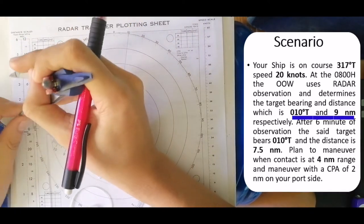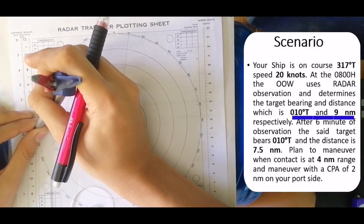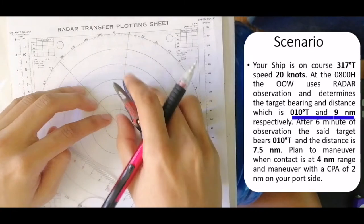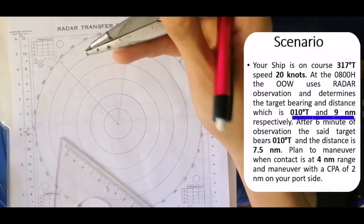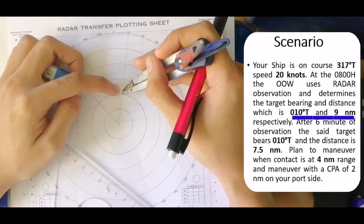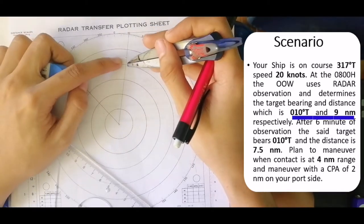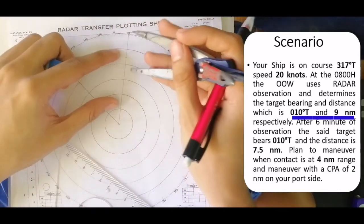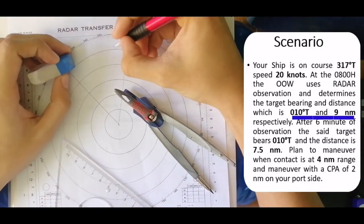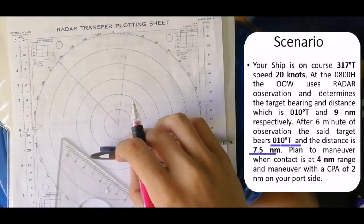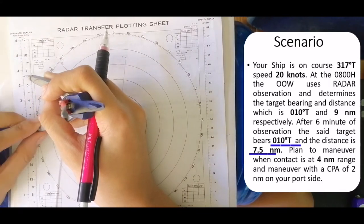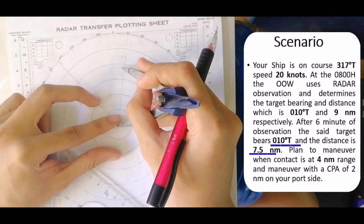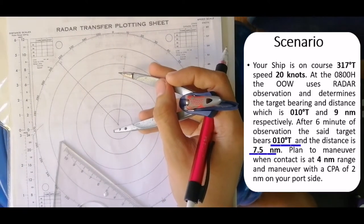For 12 nautical miles, measure 9 nautical miles and transfer it — that gives you your first observation. You can also use the range rings, since each ring is 2 miles: two, four, six, eight — you can add one more to get nine. For your second observation, measure 7.5 and transfer it. That marks your second observation.